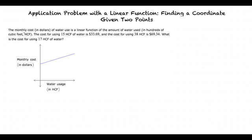The monthly cost in dollars of water use is a linear function of the amount of water used in hundreds of cubic feet, or HCF. The cost for using 15 HCF of water is $33.69, and the cost for using 38 HCF is $69.34. What is the cost for using 17 HCF of water?